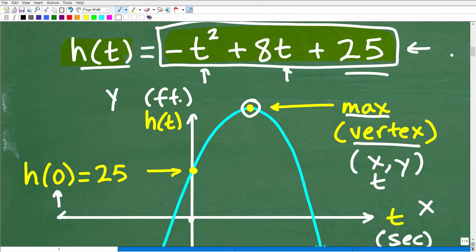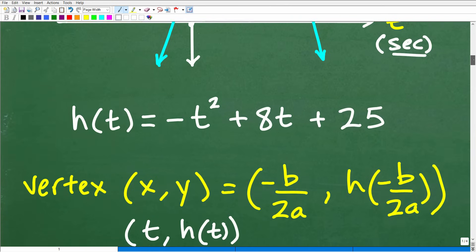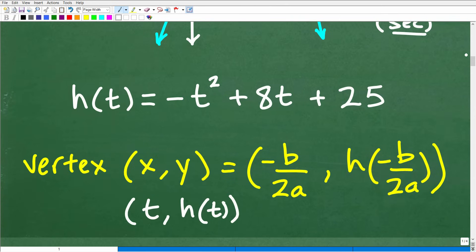Let's go ahead and take a look at how we do that right now. Basically, here is our function. When you want to find the vertex, the vertex is an x y point. We're not dealing with the x-axis; our x-axis is t and our y-axis is h of t. So our point would be represented as t, h of t.